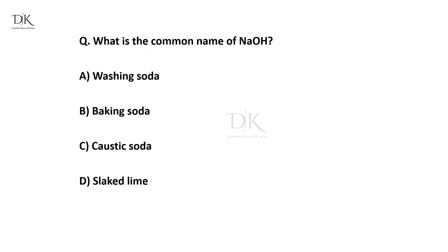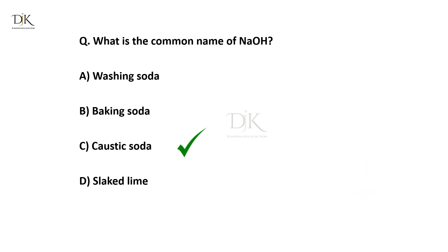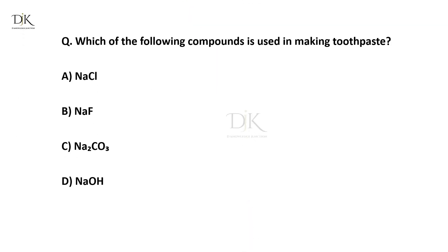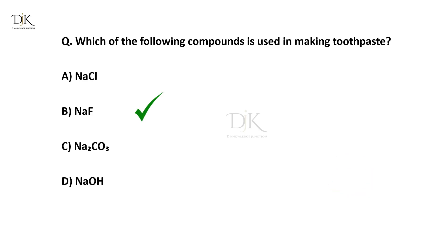What is the common name of NaOH? The right answer is caustic soda. Which of the following compounds is used in making toothpaste? The right answer is sodium fluoride.